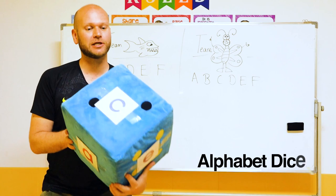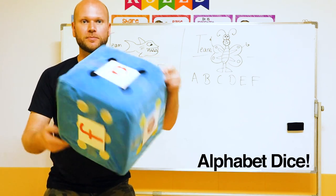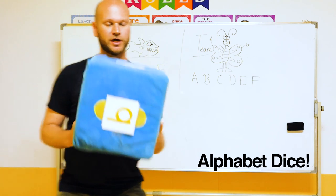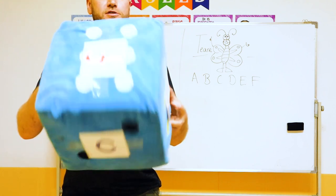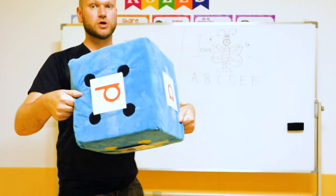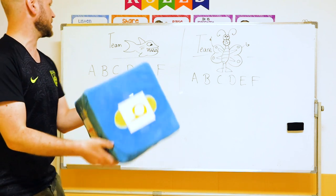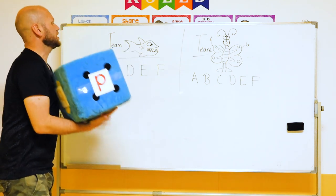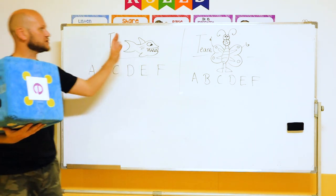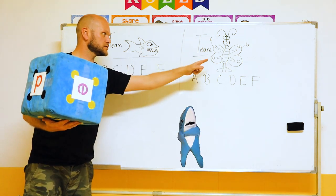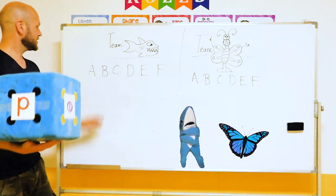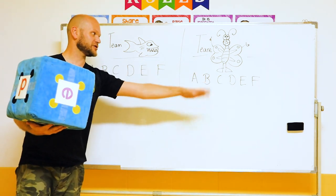This game guys takes a little bit of pre-preparation. So what you need to do is stick some letters onto your dice. So here we've got lowercase letters. A, B, C, D, E, F. On the board, two teams. We have Team Shark, Team Butterfly Man. Capital letters here and here.